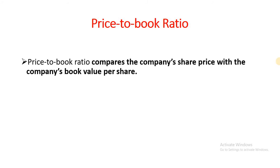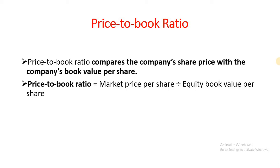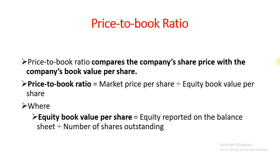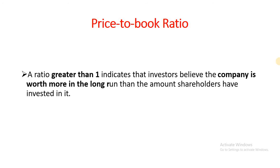Now we'll look at the price-to-book ratio. This ratio compares the company's share price with the company's book value per share. The price-to-book ratio is equal to market price per share divided by equity book value per share. Equity book value per share means the value of equity based on the balance sheet divided by the number of shares outstanding, or simply the total number of shares of the business which are trading in the stock exchange.